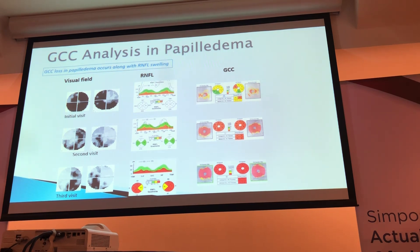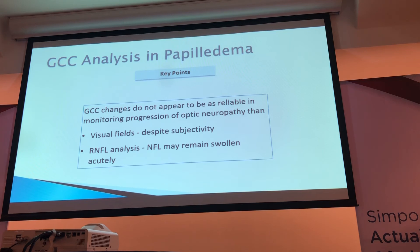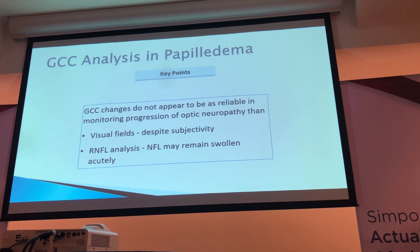Ganglion cell complex loss in papilledema occurs alongside RNFL swelling, so you can see damage even in the setting of swelling. That can be challenging for patients with persistent swelling when trying to determine if treatment is appropriate. Even with swelling, you can start seeing progressive thinning of the ganglion cell complex. Visual fields, despite their subjectivity, remain the mainstay for evaluating vision loss. The RNFL analysis is complicated by increased edema and stays swollen for an extended period, but GCC changes may be seen earlier.